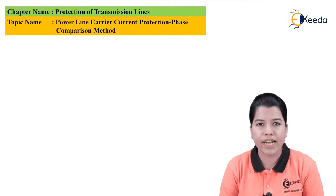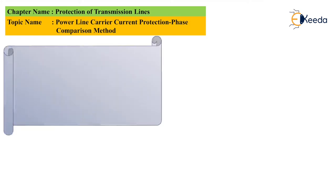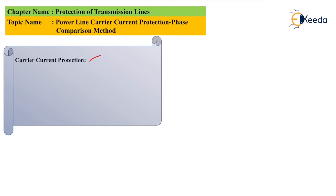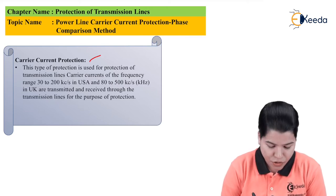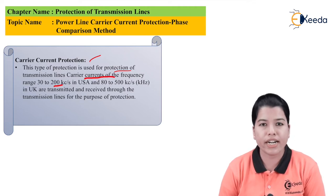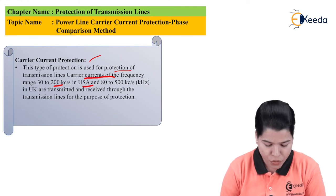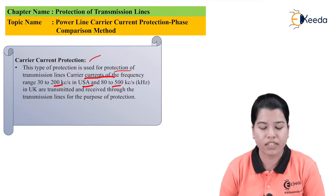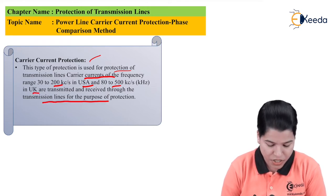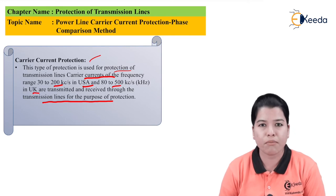Whenever a fault occurs, the fault current is sensed by the relay, and the relay sends a signal to the relay connected at the receiving end so that both circuit breakers — at the sending end as well as the receiving end — operate simultaneously. This signal is called the carrier current signal. This type of protection is used for the protection of transmission lines. The carrier currents of the frequency range 30 to 200 kilocycles per second in the USA, whereas 80 to 500 hertz in the UK, can be transmitted and received through the transmission lines.